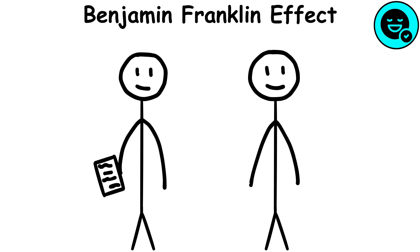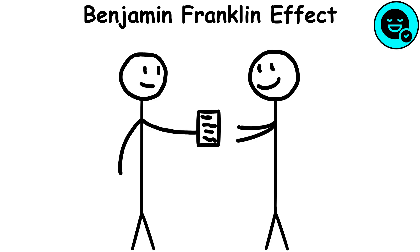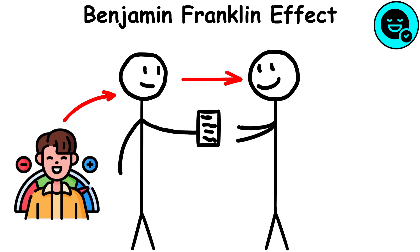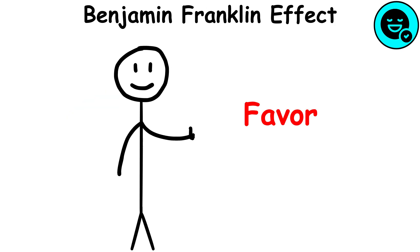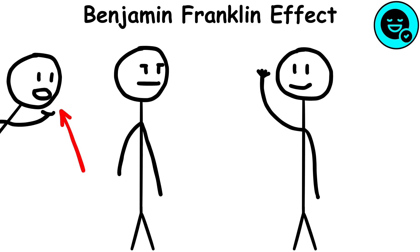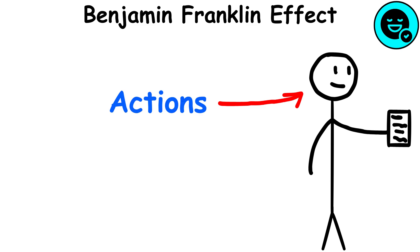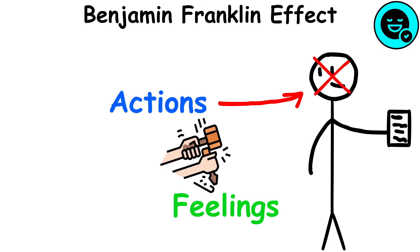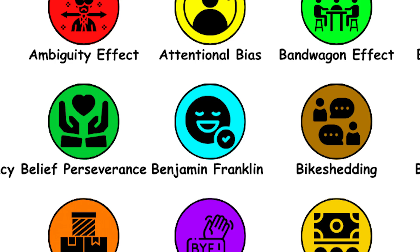Benjamin Franklin effect. This describes how doing a favor for someone can actually make us feel more positively towards that person, especially when we do a favor for someone we dislike and then convince ourselves we like them to resolve this cognitive dissonance. This shows how our actions can shape our feelings, often without our awareness.